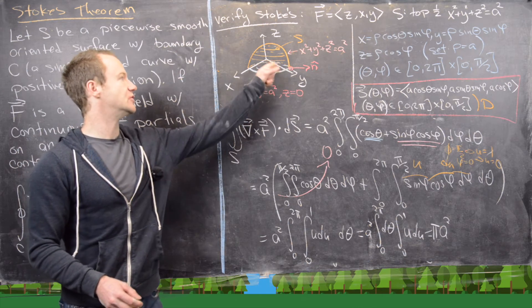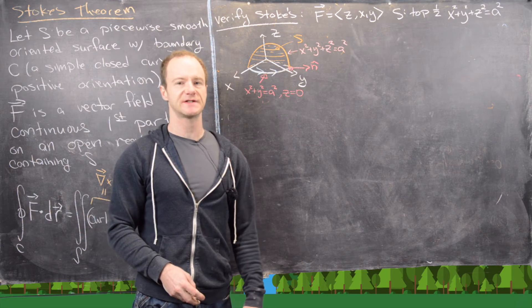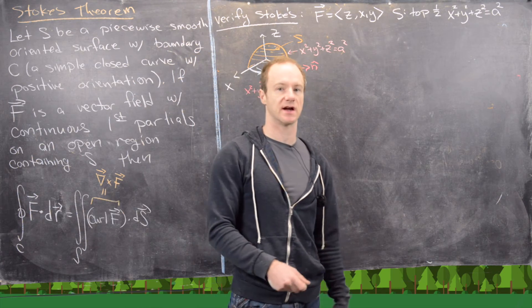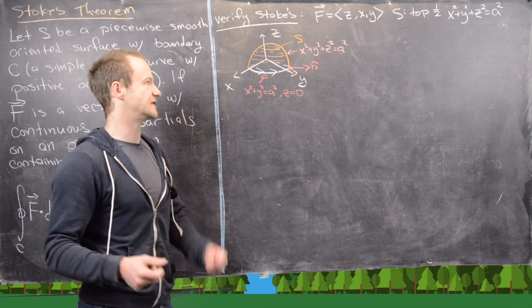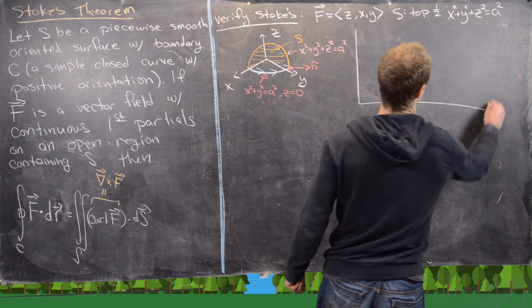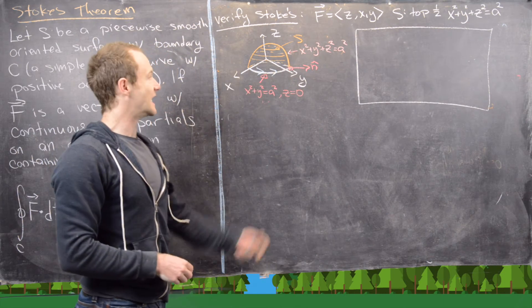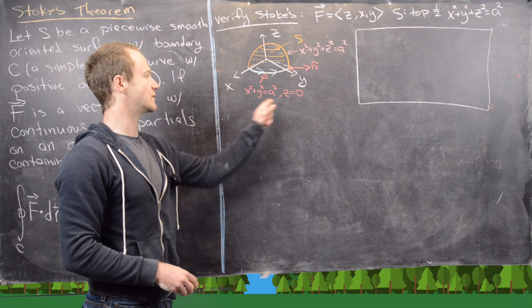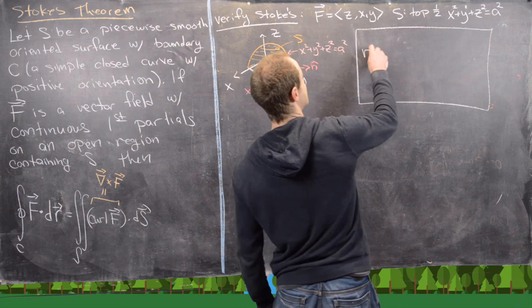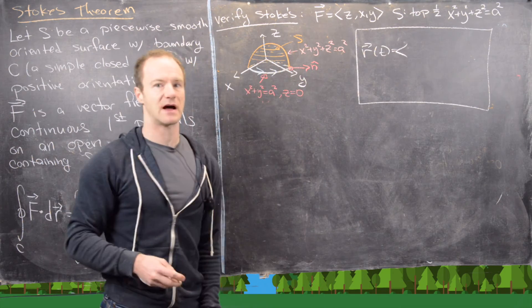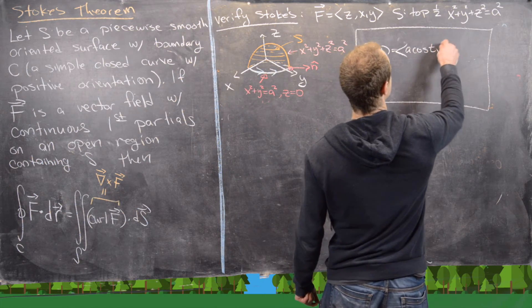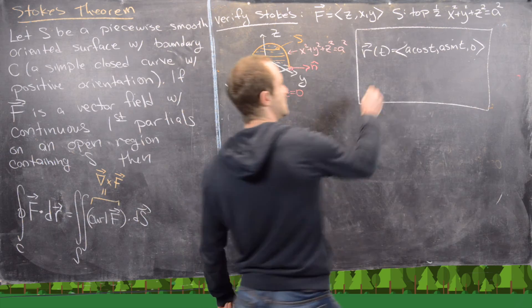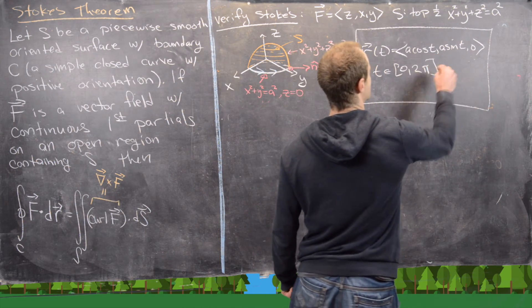We found the surface integral equals πA². Now let's do the line integral side of Stokes' Theorem and verify we get the same value. We need to parametrize the bounding curve, which is just a circle of radius A in the XY plane: X² + Y² = A², Z = 0. Inspired by polar coordinates, the parametrization is R(t) = (A cos t, A sin t, 0) for t ∈ [0, 2π].